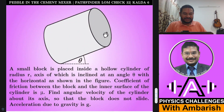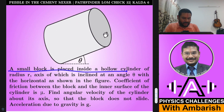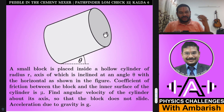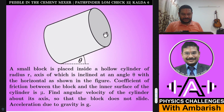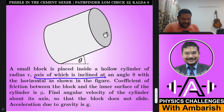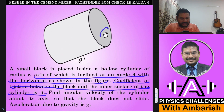So let's have a look at the problem. A small block is placed inside a hollow cylinder of radius r, the axis of which is inclined at angle theta with the horizontal as shown in the figure. The cylinder has radius r and can spin about its inclined axis — somewhat like a concrete mixer or Muller used for mixing cement. We have placed a pebble inside and it can rotate clockwise or anticlockwise. The coefficient of friction between the block and the inner surface of the cylinder is mu.